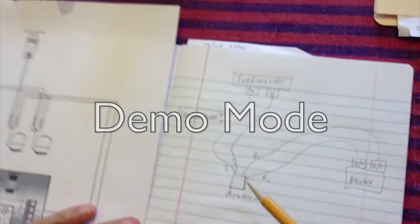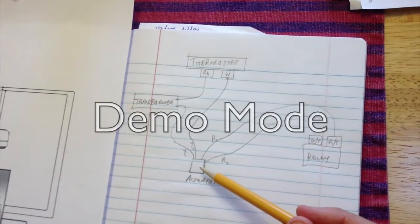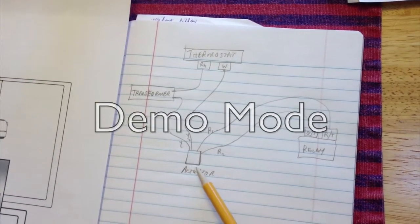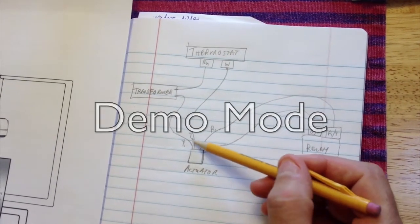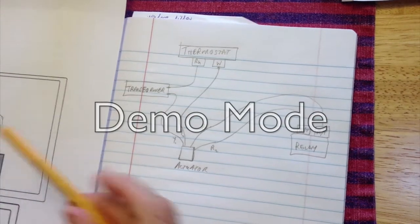And what we ended up with is we have this four-wire actuator that's going to be running the basement zone control, zone valve. And two of them are yellow and two of them are red, the wires that come out of it. And according to this diagram,